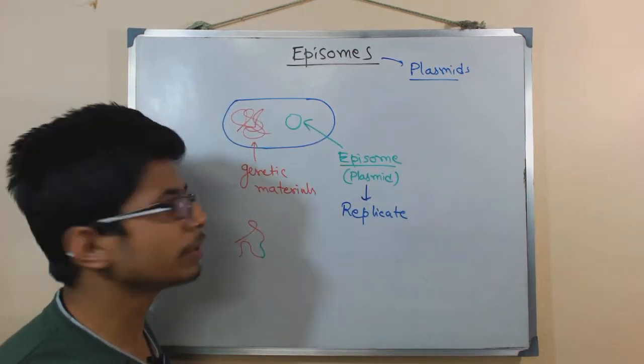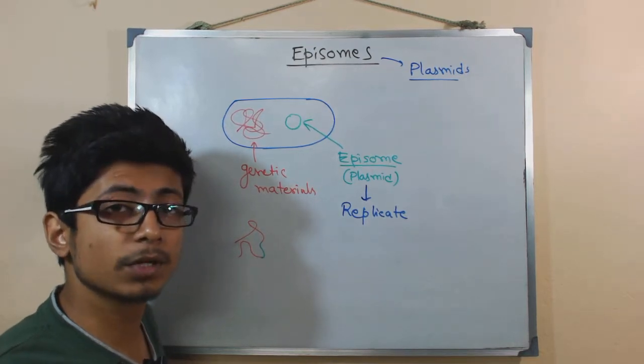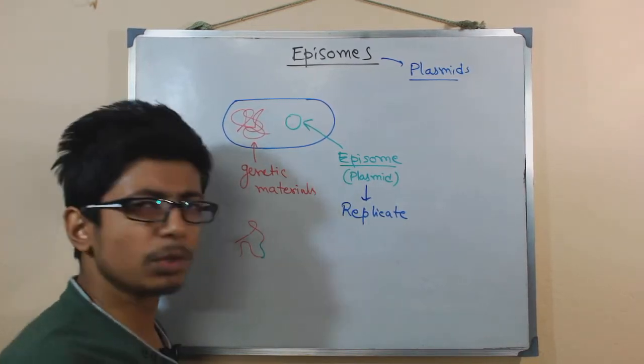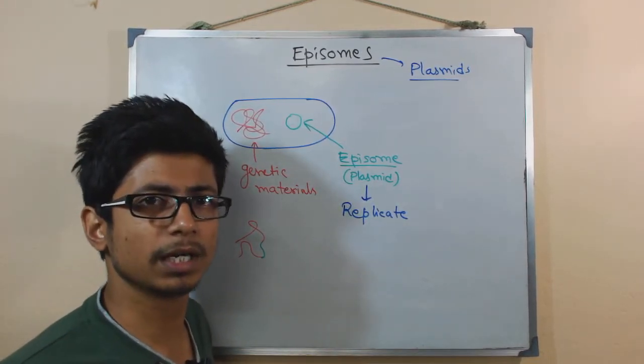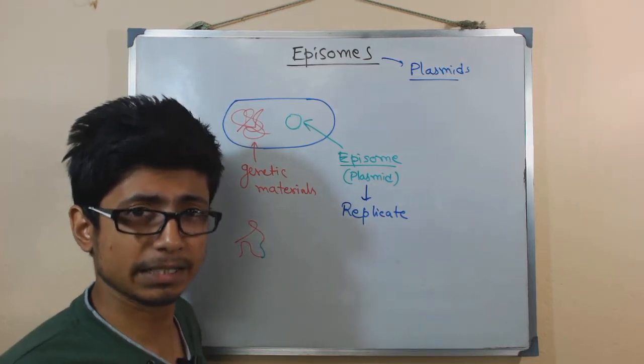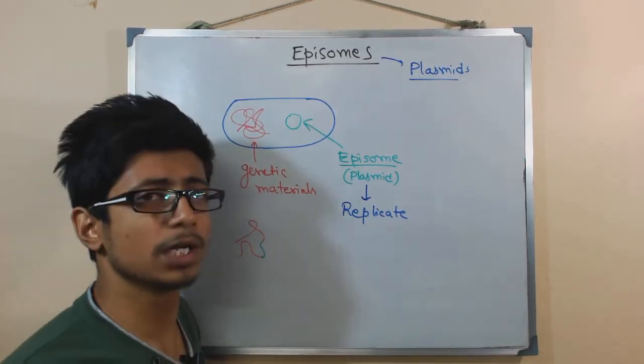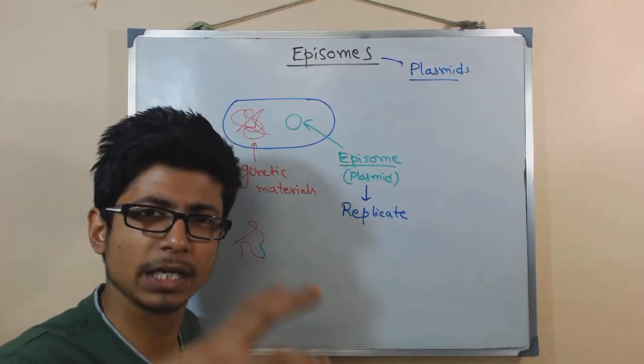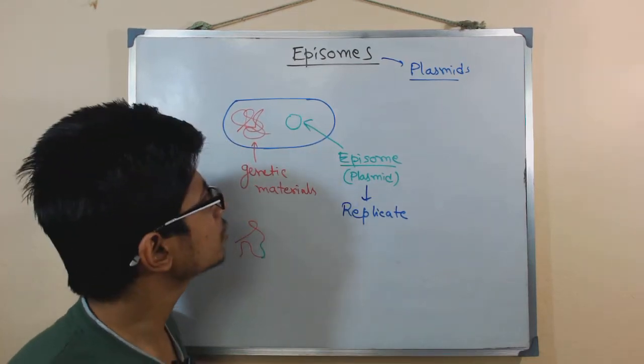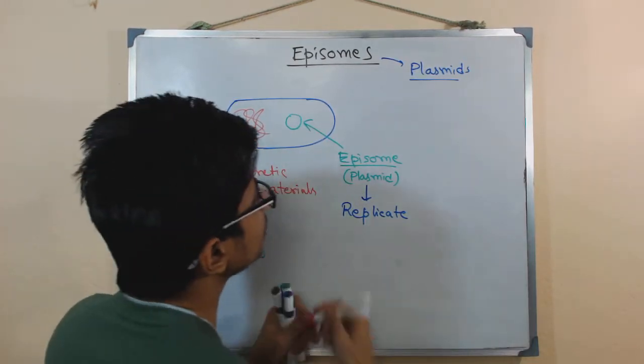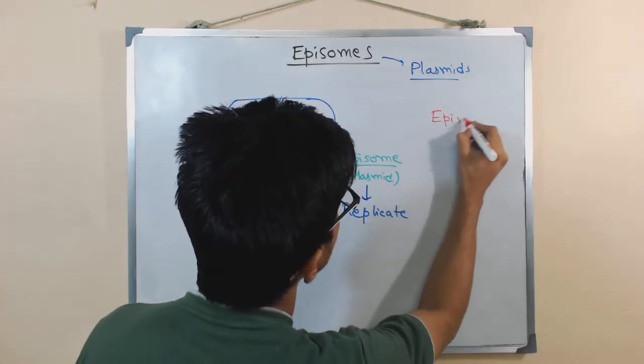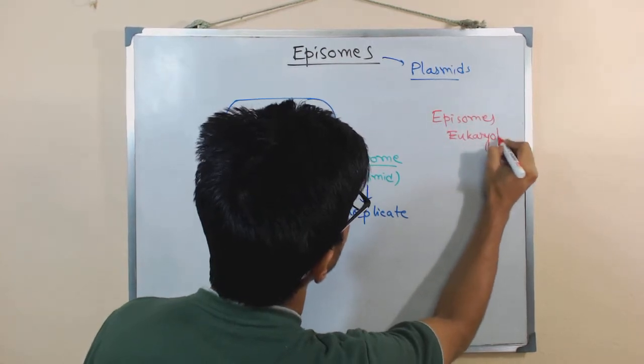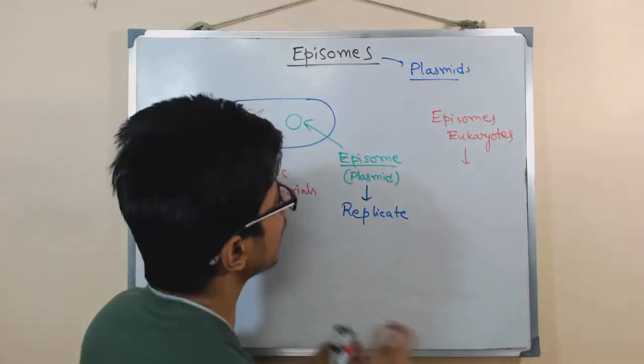In eukaryotic cells, we can see the presence of episomes actually from viruses because in eukaryotes we do not have a presence of extra chromosomal materials, extra chromosomal inheritance pattern like these plasmids because we have complicated structures, we have the DNA wrapped around histones and in chromosomes.